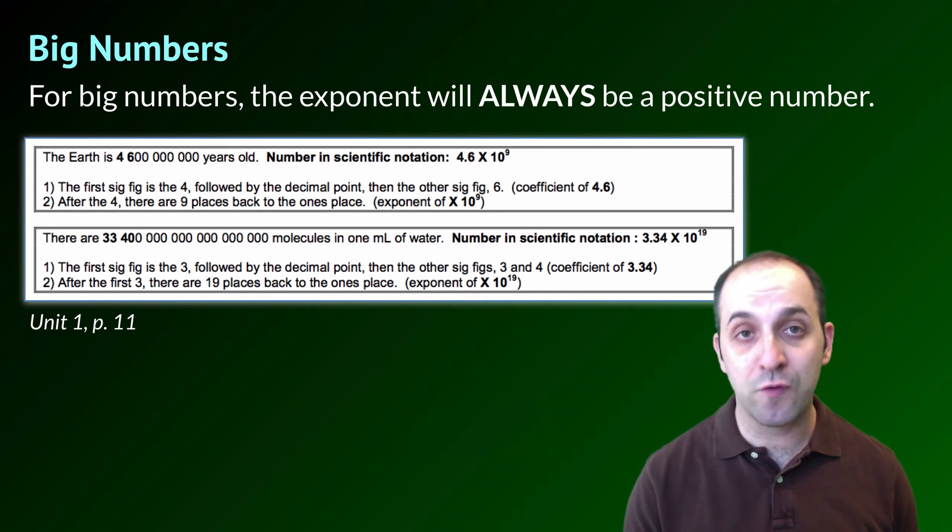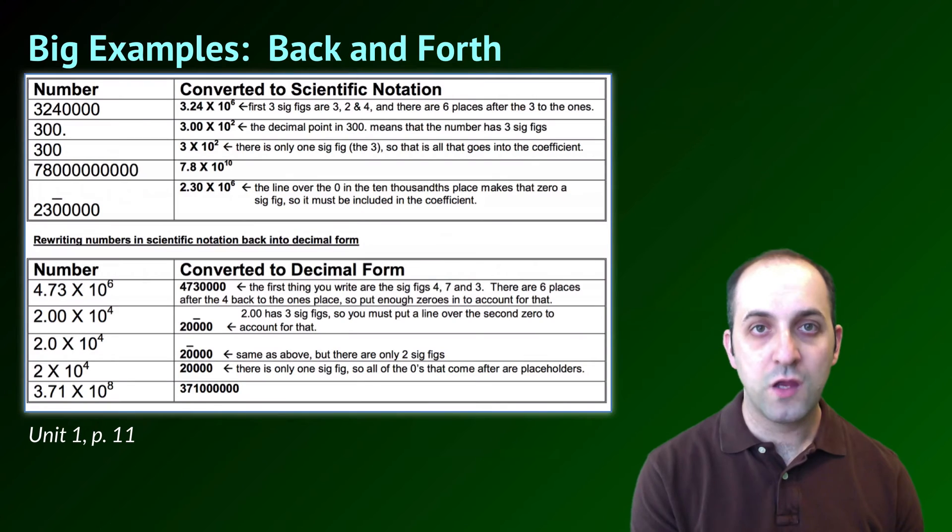Here are a couple of examples from page 11 in your packet. Take a moment and look at them. You definitely want to be able to go back and forth between scientific notation and regular notation for big numbers and small numbers. Page 11 gives you a couple examples for the large numbers that you'll probably have to deal with at some point in your life as a scientist.